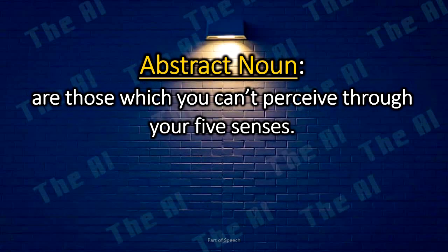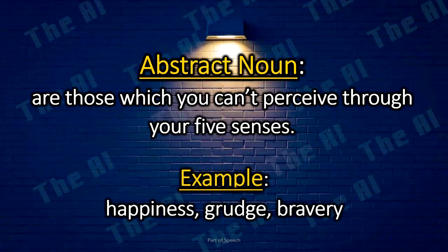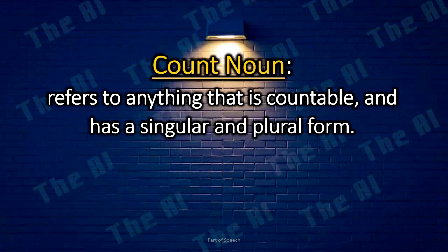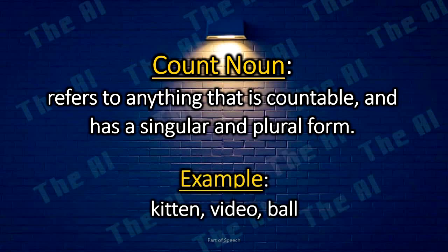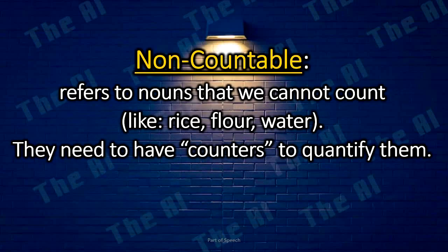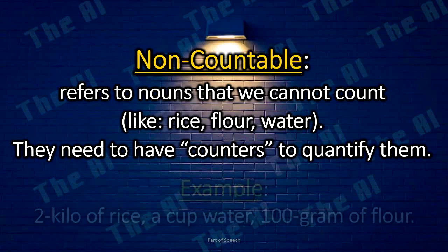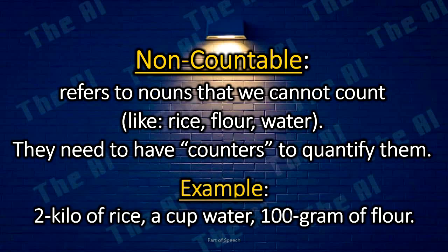Abstract nouns are those which you cannot perceive through your five senses. Examples: happiness, grudge, bravery. Count nouns refer to anything that is countable and has a singular and plural form. Examples: kitten, video, ball. Non-countable nouns refer to nouns that we cannot count, like rice, flour, water. They need counters to quantify them. Examples: two kilos of rice, a cup of water, 100 grams of flour.